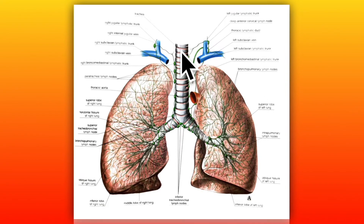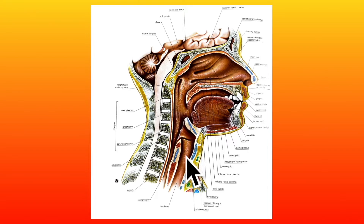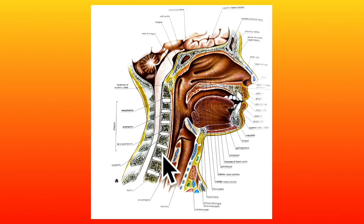This is the trachea. In this diagram you can see the pharynx, here is the larynx, and here is the cervical vertebra. The trachea begins from the lower part of the larynx right here, on a level with the 6th cervical vertebra, and it extends to the upper border of the 5th thoracic vertebra.